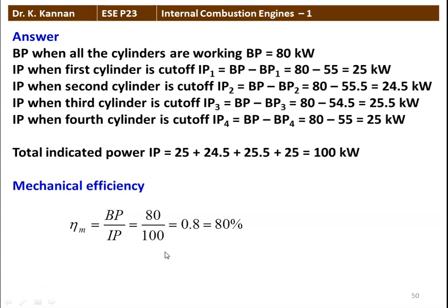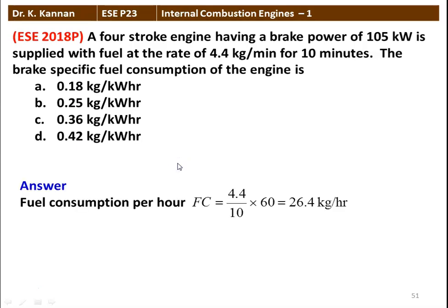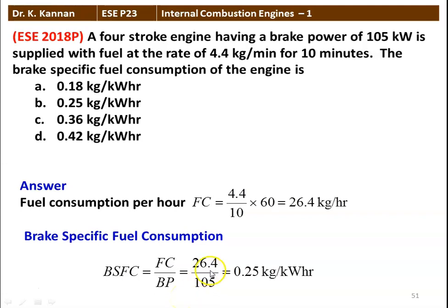This is the calculation for the Morse test. The next question from the 2018 question paper: a four-stroke engine having a brake power of 105 kilowatt is supplied with fuel at the rate of 44.4 kilograms per 10 minutes. The brake specific fuel consumption options are 0.18, 0.25, 0.36, or 0.42 kilogram per kilowatt hour. Fuel consumption per hour Fc equal to 44.4 divided by 10 into 60 equal to 26.4 kilograms per hour. Brake specific fuel consumption BSFC equal to Fc by BP: 26.4 divided by 105 equal to 0.25 kilograms per kilowatt hour. Option B is the correct answer.